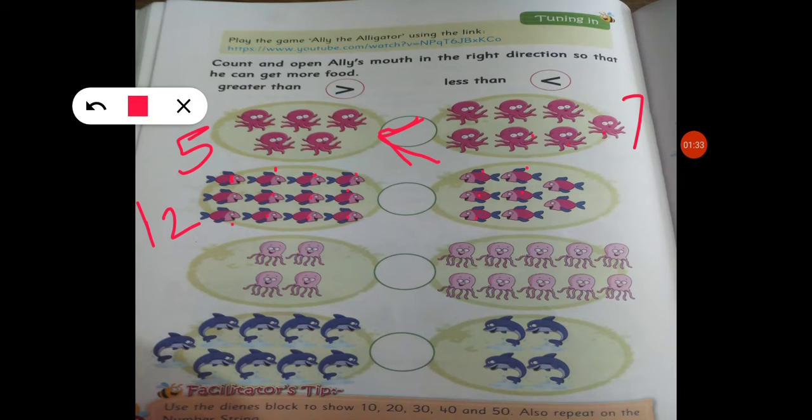One, two, three, four, five, six, seven, eight. Here are eight fish. So twelve is more than eight. Ali's mouth will open towards twelve, where there is more.